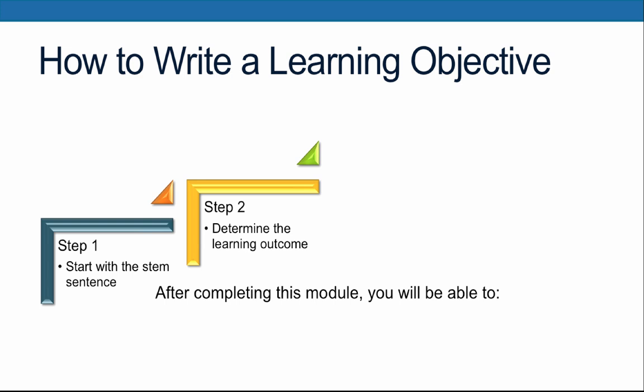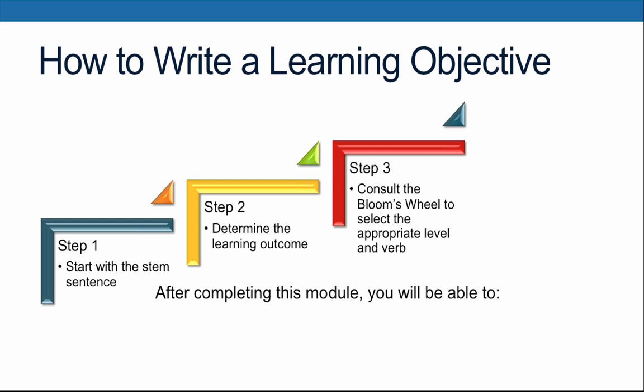Next, determine the learning outcome. Think about what it is that you want the students to be able to do, and then think about how you will know that they understand what you've taught them. What is the outcome or product that they will do or produce that demonstrates they've mastered the concept? I'll use this particular presentation as an example. When designing this video, I identified that I wanted participants to know the six levels of Bloom's Taxonomy, and I then asked myself how I will be able to determine that the learners understand it.